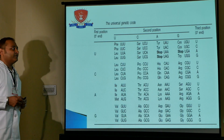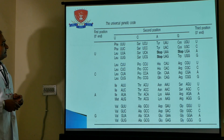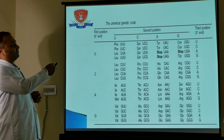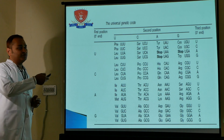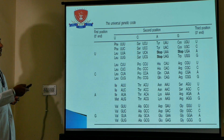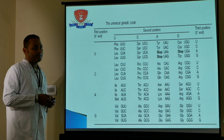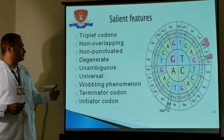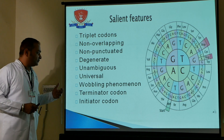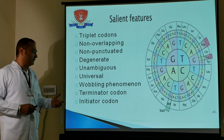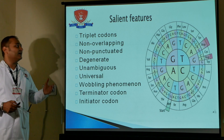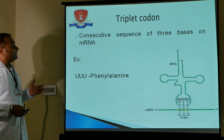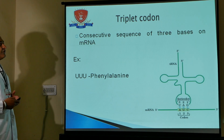In the chart you can see all codons in triplets. For phenylalanine: anticodon pairs with UUU, UUC, and UUG. These illustrate the salient features: triplet codon, non-overlapping, non-punctuate, degenerate, unambiguous, universal, wobbling phenomena, terminator codon, and initiator codon.